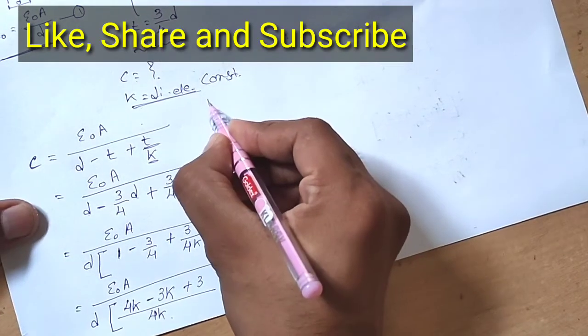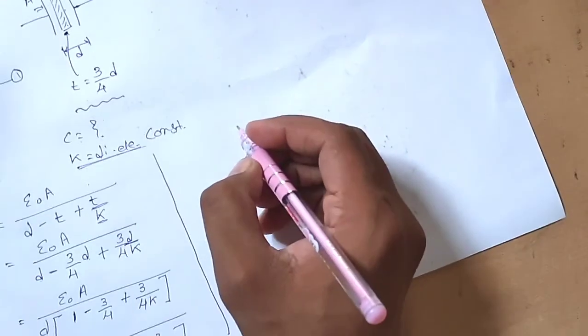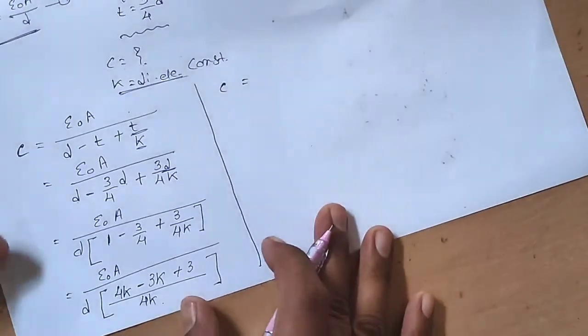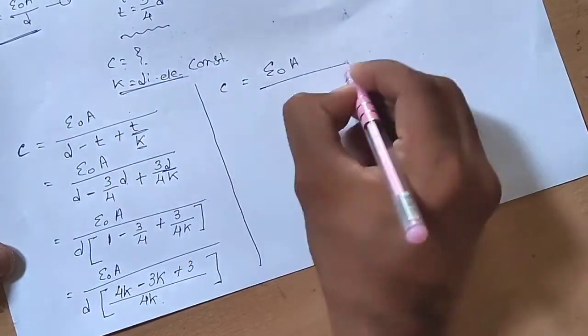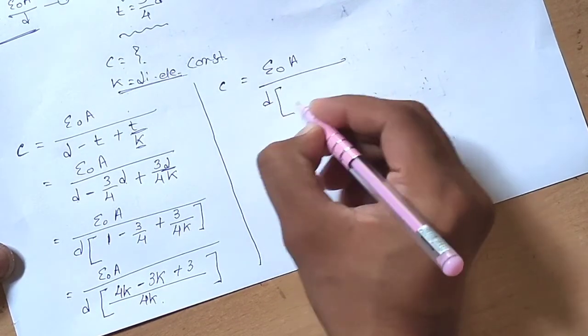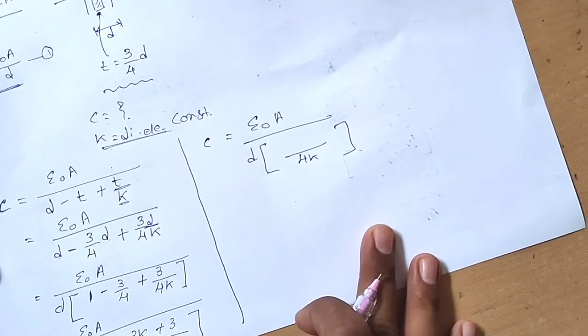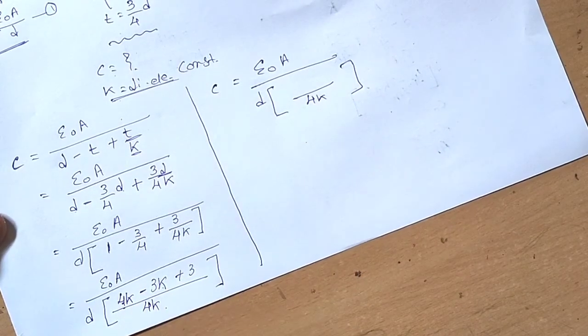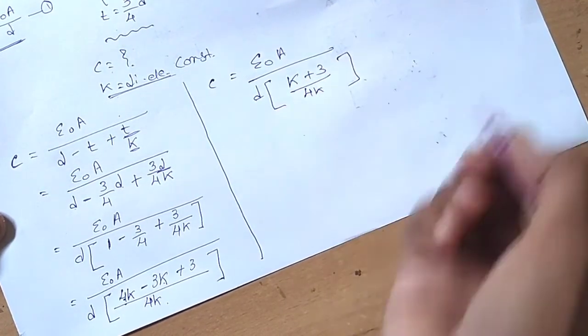We have to find C. So C = ε₀A / [d(4k - 3k + 3)/(4k)]. In the denominator we have 4k, and 4k minus 3k equals k, plus 3.